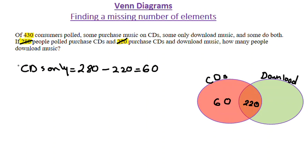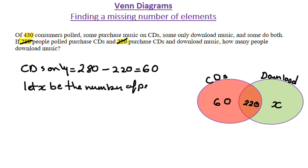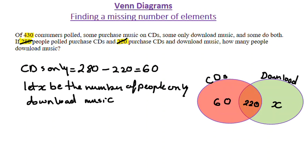Now I've checked that this is correct. The question is asking how many people download music. The problem is that I don't know how many people are in the download-only section — this is the missing number of elements I'm looking for. So I'm going to write X here as a variable, and I need to define that variable. Let X be the number of people that only download music. X, plus the intersection of 220, plus the 60 people who only use CDs, all together should equal the total, which is 430.